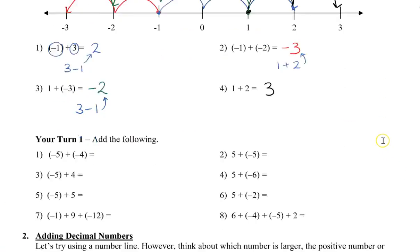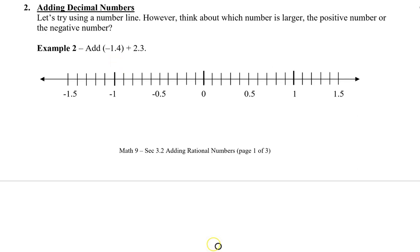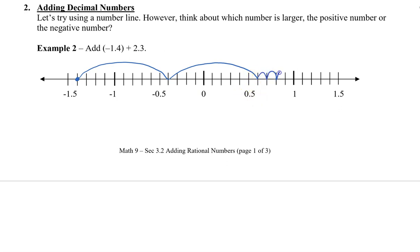So let's extend this to decimal numbers. When we're adding decimal numbers, let's use the number line, but also think about which number is larger — is it the positive number or the negative number? Here we have negative 1.4, which starts down here, and we're going to add 2.3. I'm going to do this by jumping one unit — that's ten spaces since we divided the number line into tenths — so that's plus one. Then we jump to the next dash, which is a little bit greater than 0.5, so that's plus two. Then we need to go 2.3, so we go one, two, three, and this number here is 0.9.